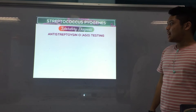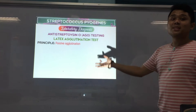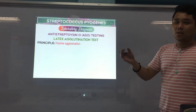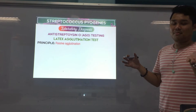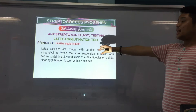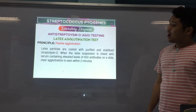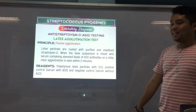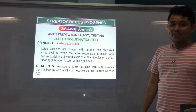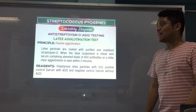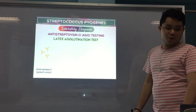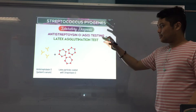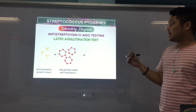We now go to latex agglutination, which we will also perform in lab. The principle is passive agglutination. The carrier — latex — contains antigens that were artificially put there. In this case, latex particles are coated with the streptolysin O antigen, and we're looking for ASO antibodies in the patient. The positive result is visible agglutination. The reagents include the latex particles coated with streptolysin O, a positive control serum with ASO, and a negative control serum without ASO.